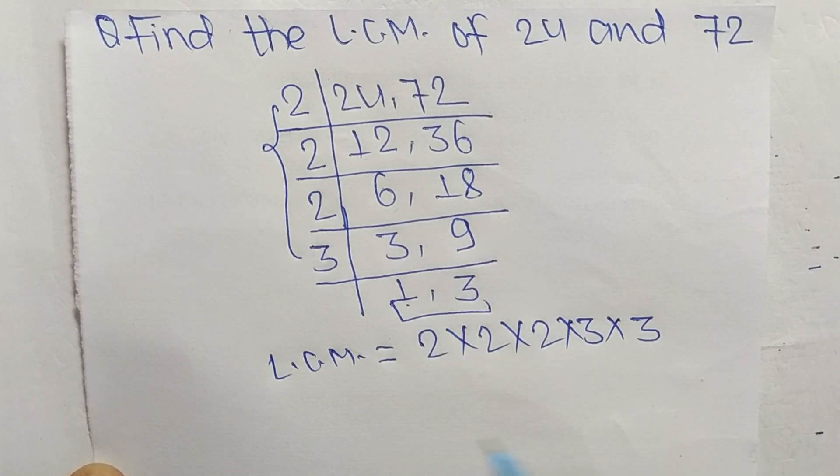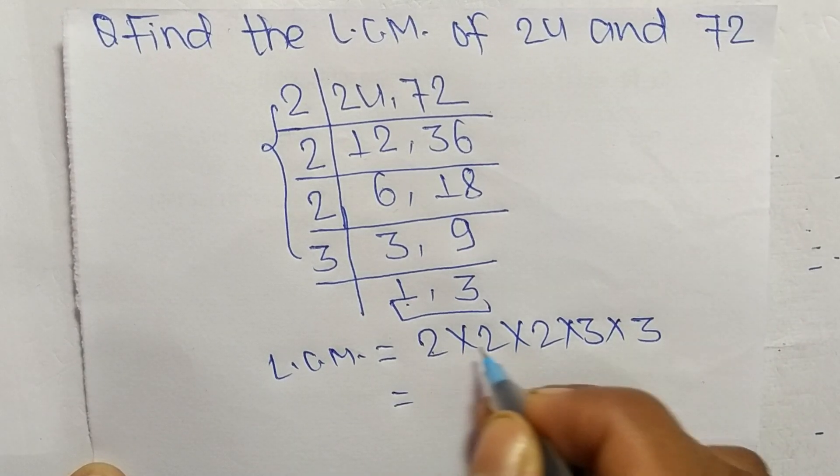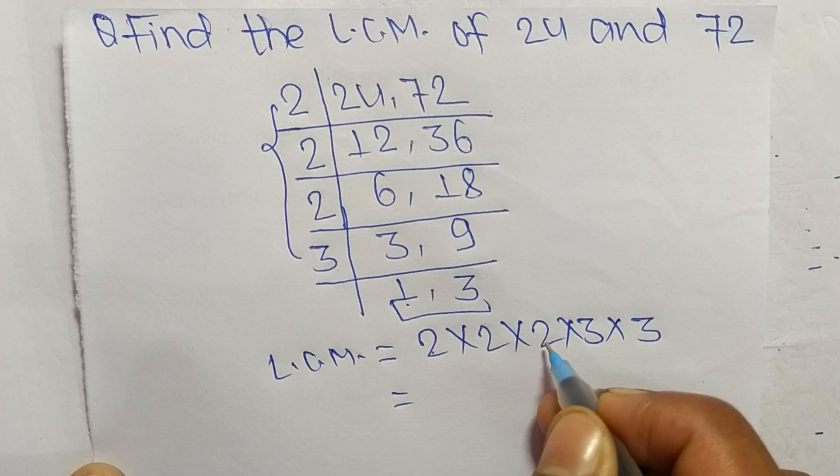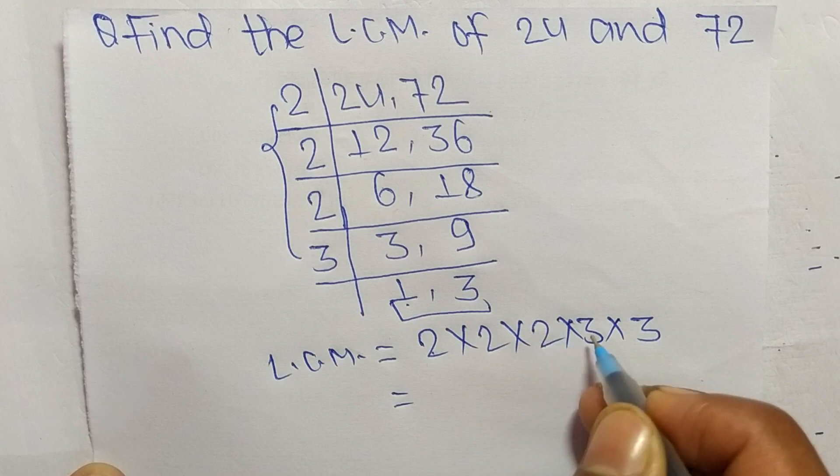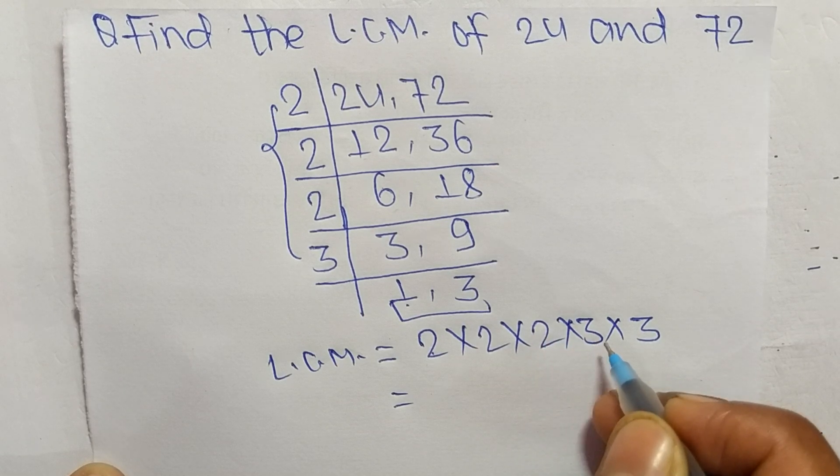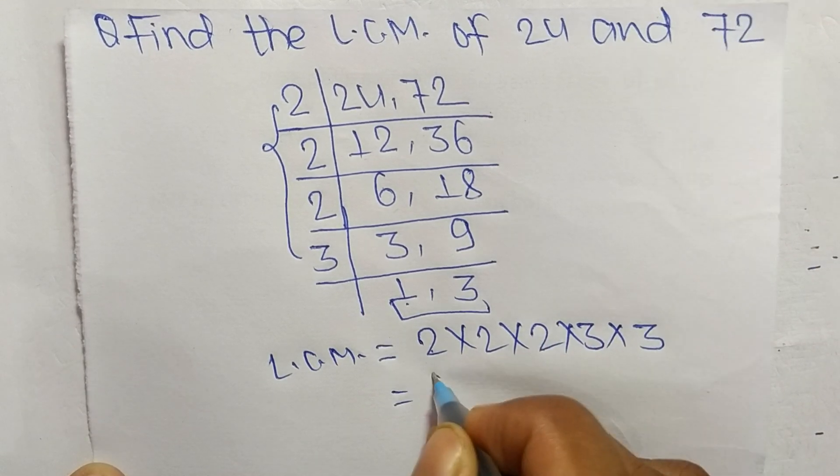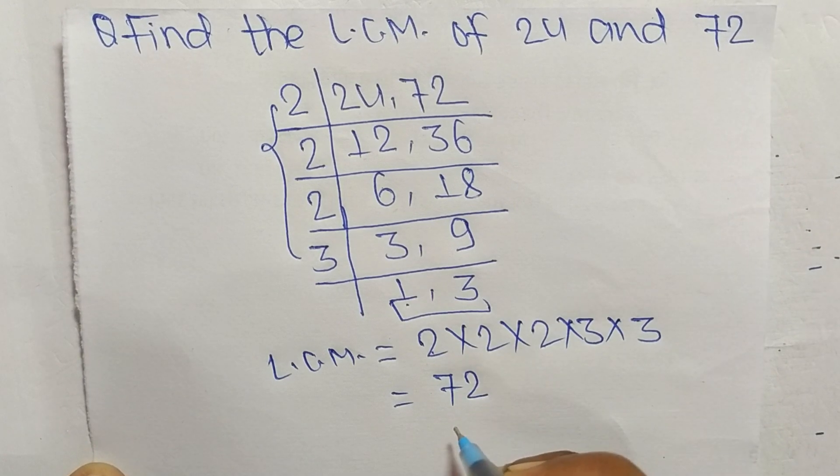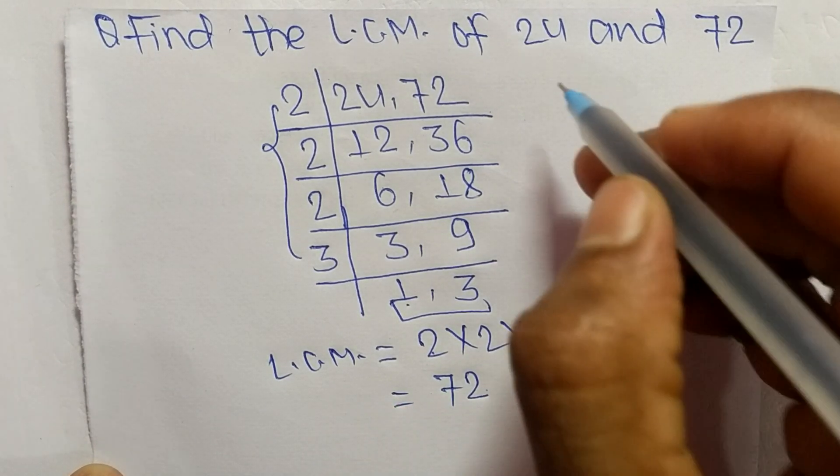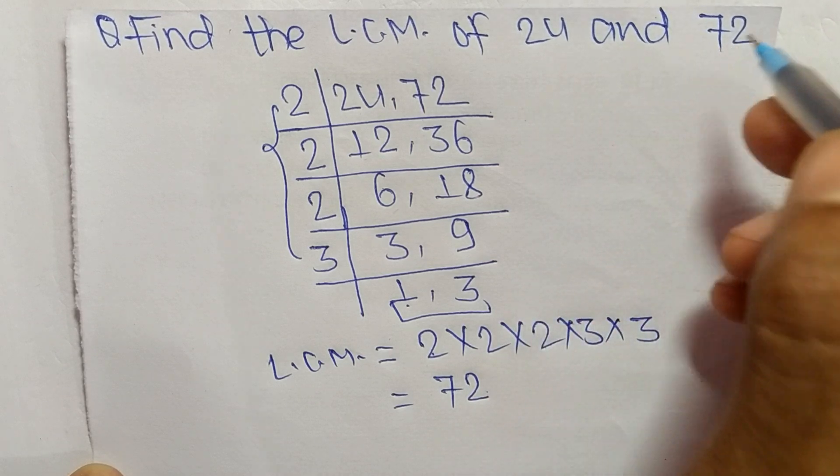So 2 times 2 means 4, 4 times 2 means 8, 8 times 3 means 24, 24 times 3 means 72. So 72 is the LCM of 24 and 72.